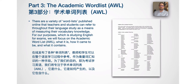Part 3 is the Academic Word List. There are a variety of word lists published online that teachers and students can refer to throughout their language study as a means of measuring their vocabulary knowledge. For our purposes — studying English for exams — we will focus on the Academic Word List: what it is, how it came to be, and what it contains.